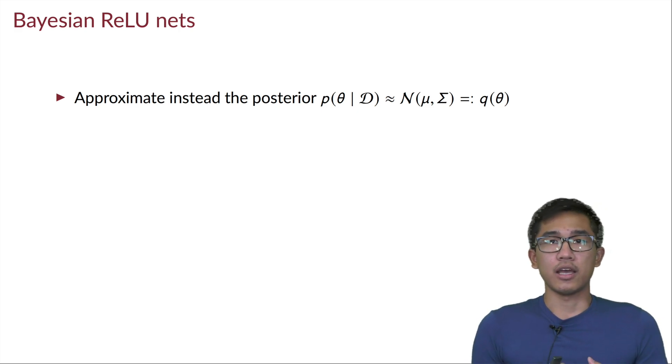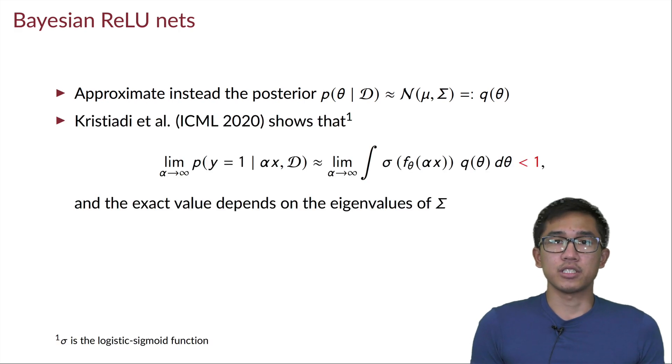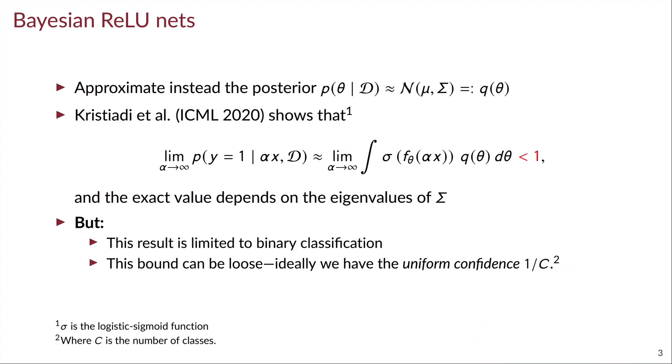And suppose now we move away from the point estimation and we have instead an approximate Gaussian posterior on the network. Then when making prediction, we do marginalization, and we can show that in the same limit of α tends to infinity, this predictive distribution will always be strictly less than one.